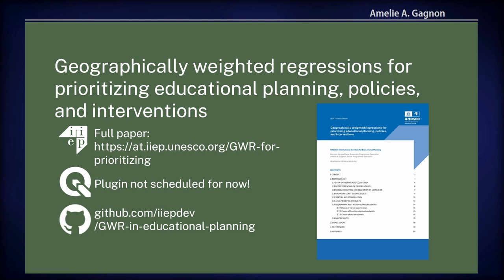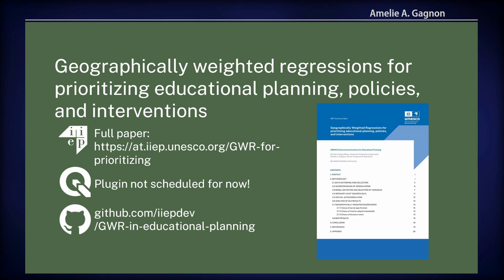When we run programs in education, we want to make sure they are efficient and we want to know where they have an impact. Running geographically weighted regressions allows us to see where programs have the most impact. In Colombia, we looked at the relationship between school feeding programs and learning assessment scores. We could see that the school feeding programs were more efficient at increasing attendance and learning scores in different areas. So if that program is reconducted the following year, the ministry might want to focus on areas where it really has an impact, maybe cut in some areas where it has none, or roll it out at a different pace. We do all this to inform decisions — we don't say cut this or do that, but it adds information to the decision-making process.